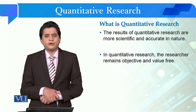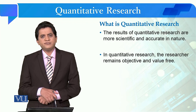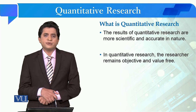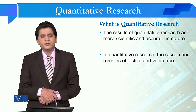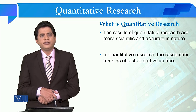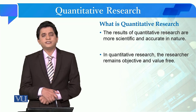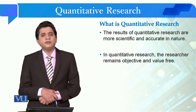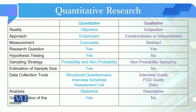The results of quantitative research are more scientific and accurate in nature compared to qualitative research. In quantitative research, the researcher remains objective and value-free. We try to adopt and ensure that the research is conducted in a value-free manner so that the researcher's bias is not included, and we ideally follow all the methods.